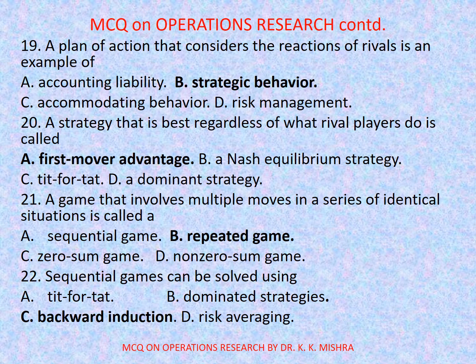Question number 20: A strategy that is best regardless of what rival players do is called — options are: a) first-mover advantage, b) Nash equilibrium strategy, c) turf attack, d) a dominant strategy. Correct option is a) first-mover advantage.